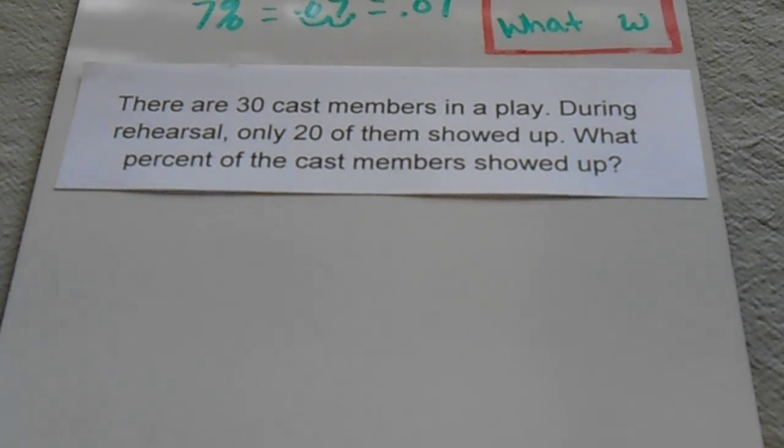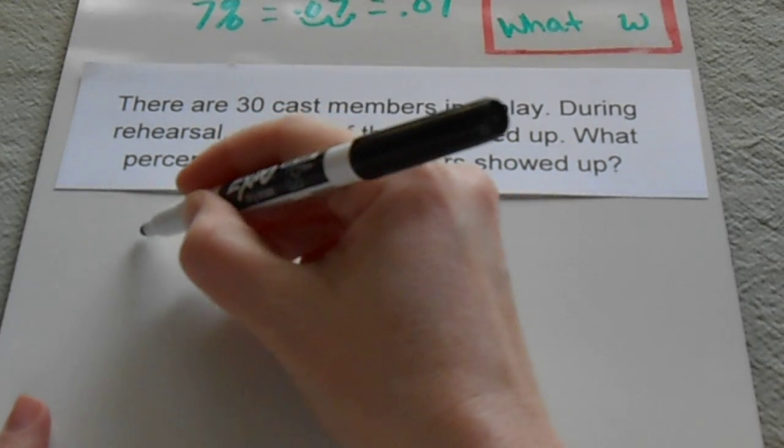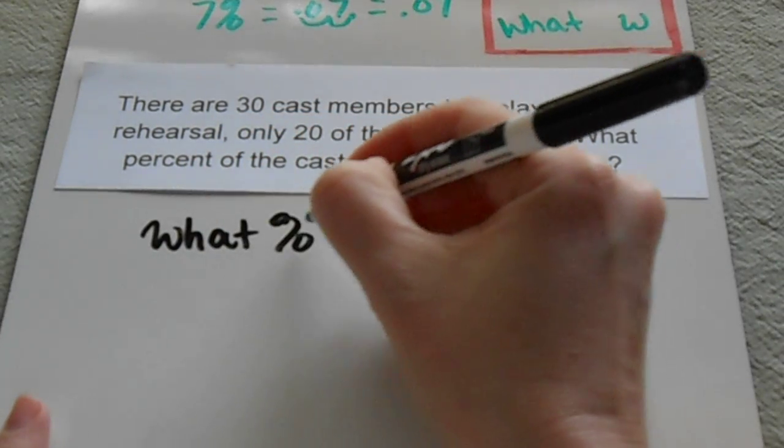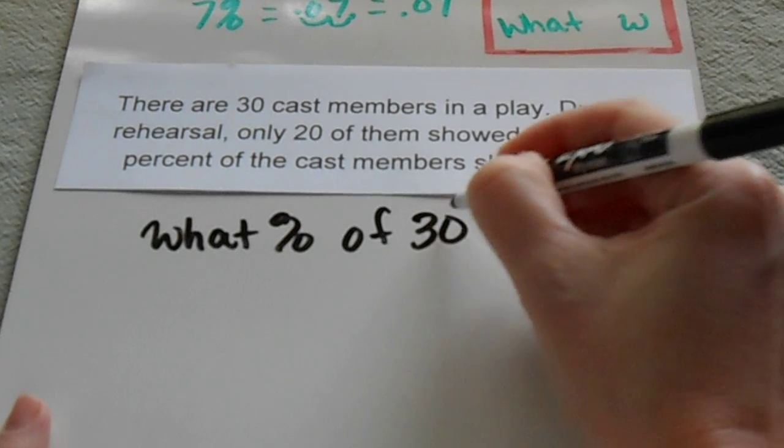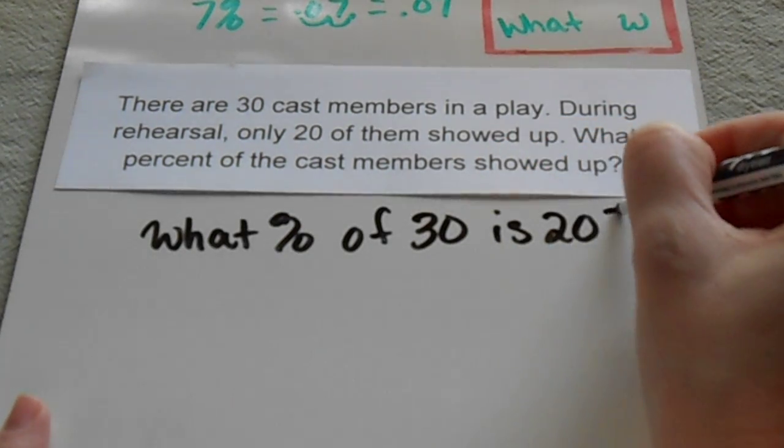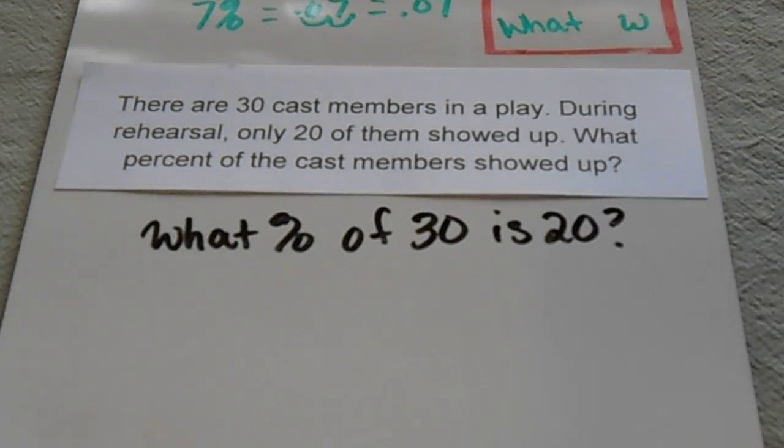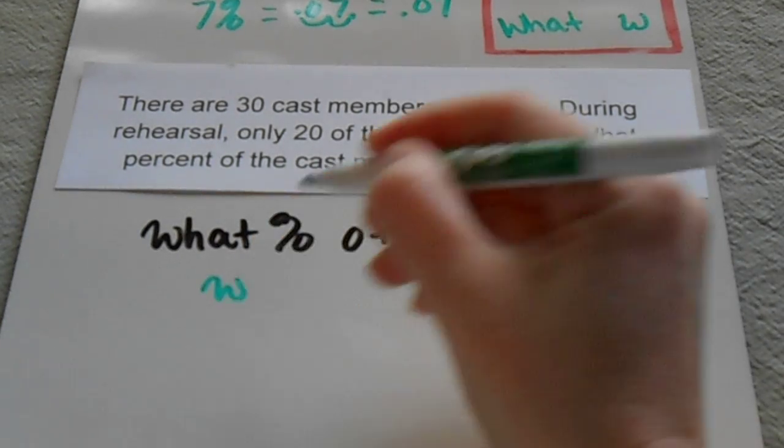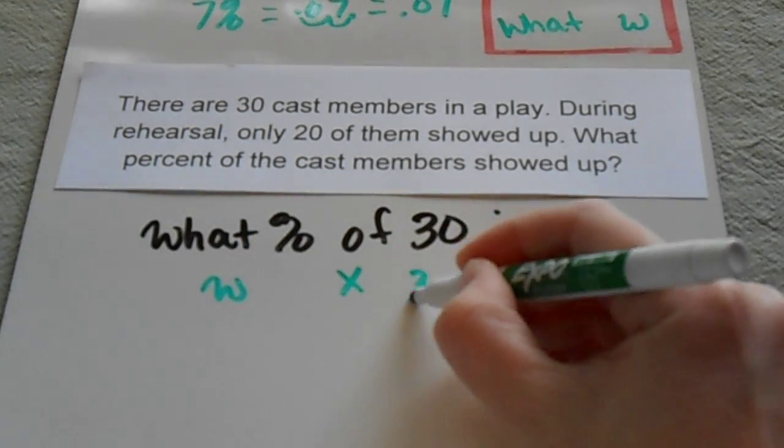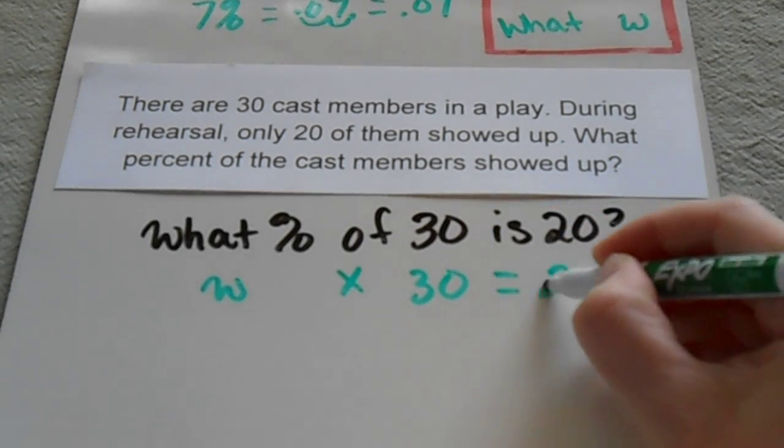So here's my simplified sentence: 'What percent of 30 is 20?' Let's rewrite that using our math terms. This is my variable of 30 is 20.